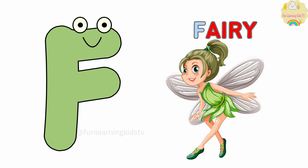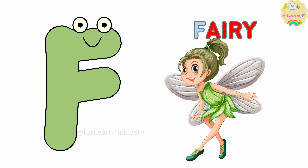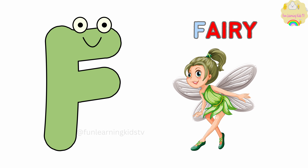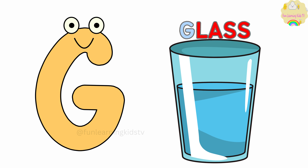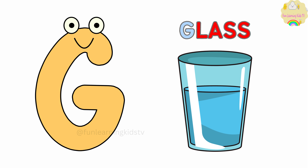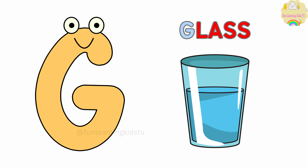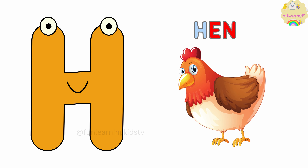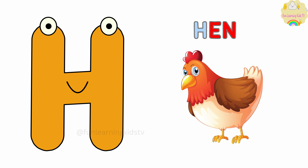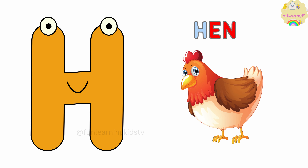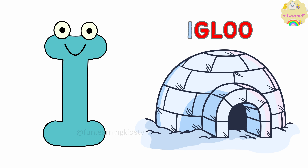F is for Fairy. F-F-Fairy, F-Fairy, F-Fairy. G is for Glasses. G-G-Glasses, G-Glasses, G-Glasses. H is for Hand. H-H-Hand, H-H-Hand, H-Hand. I is for Igloo.